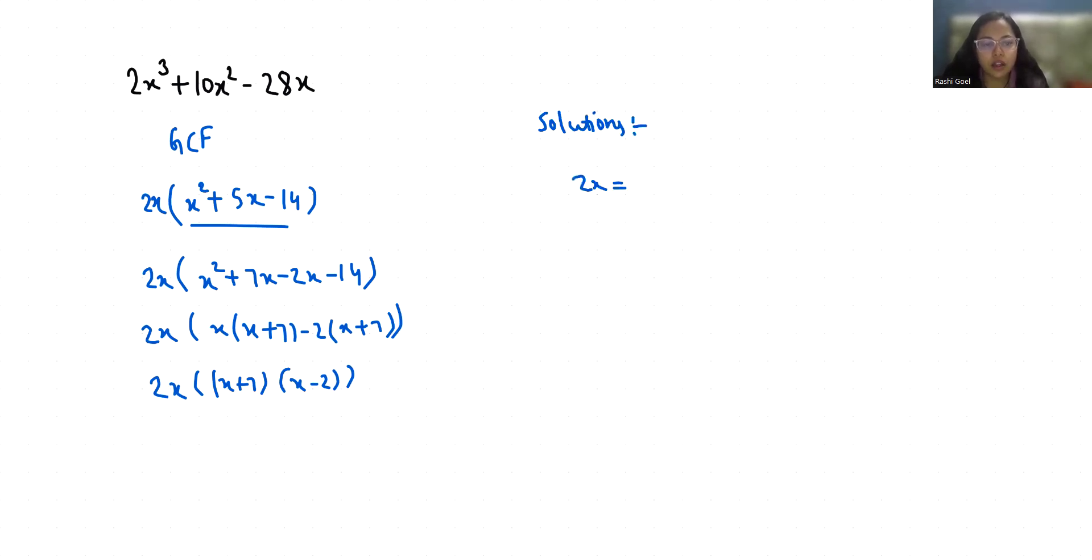...is 0. Now x + 7 = 0, so x = -7. And x - 2 = 0, so x = 2. These are the three values of x. I hope it's clear and you find it...